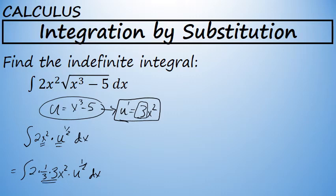One-third times 3 is just 1, so I'm not changing the problem. But I am rewriting it in a way where u prime is explicitly present in the problem. And when I integrate u to the one-half using the power rule, I can eliminate this u prime from the problem.